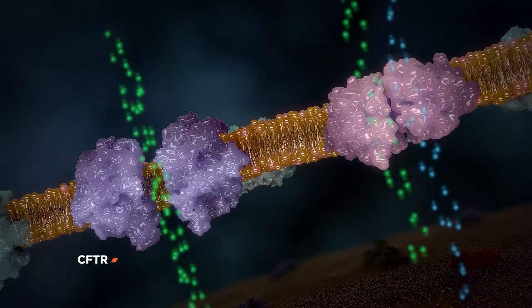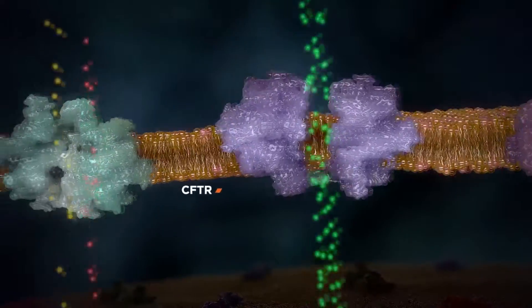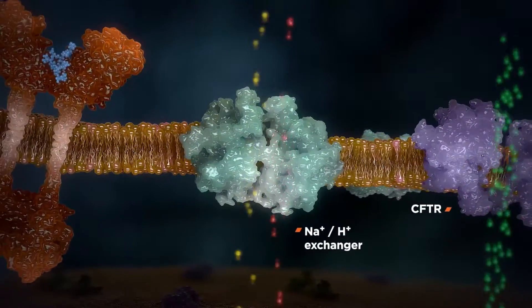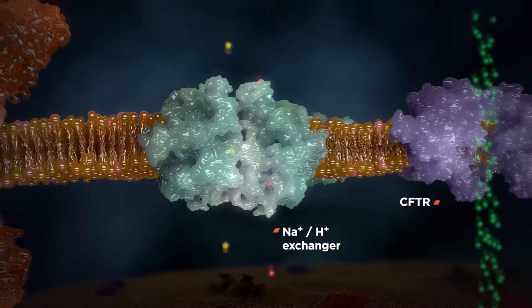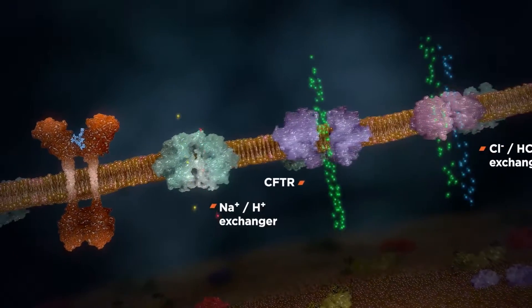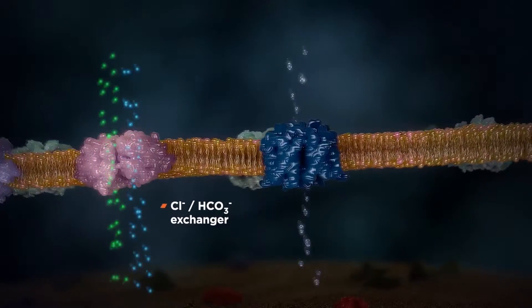It also causes activation of bicarbonate secretion by the chloride-bicarbonate exchanger and inhibition of the sodium-hydrogen exchanger, which results in reduced reabsorption of sodium. The net result of this cascade is water secretion into the lumen of the GI tract to regulate bowel function.